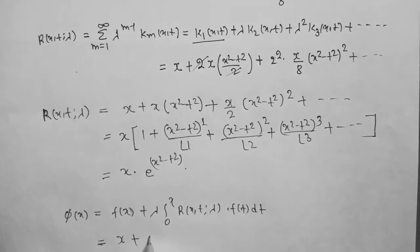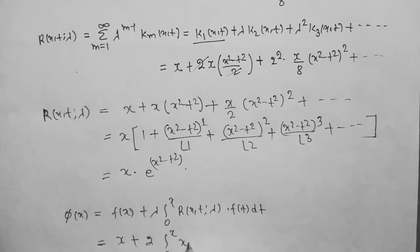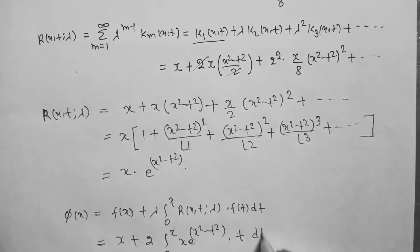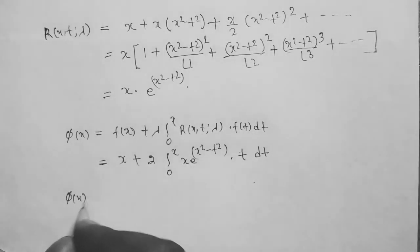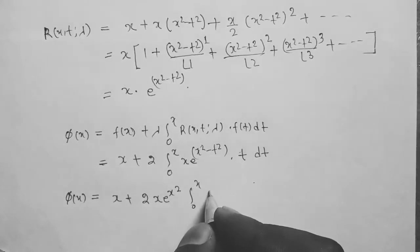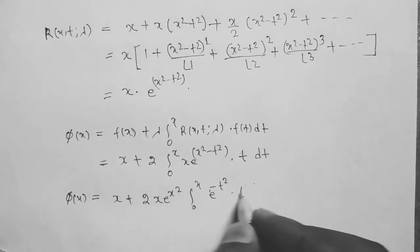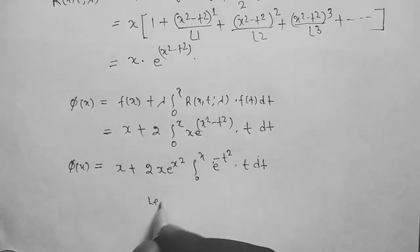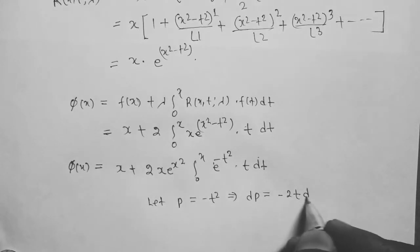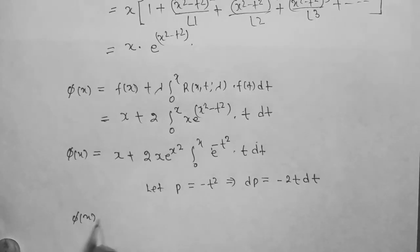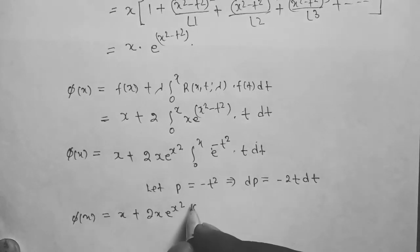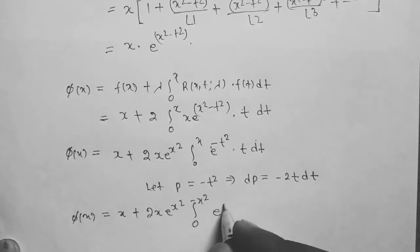Substituting f(x) = x and λ = 2, the solution becomes φ(x) = x plus 2·integral from 0 to x of x·e^(x² minus t²)·t dt. This gives φ(x) = x plus 2x·e^(x²)·integral from 0 to x of e^(−t²)·t dt. Let p = −t², then dp = −2t dt.